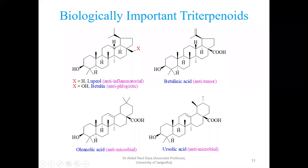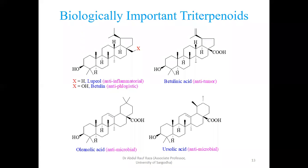Rather than a five-membered ring, it is converted into a six-membered ring. The compound is called oleanonic acid and it is antimicrobial — it kills the growth of microbes, which may be fungi, bacteria, or other pathogenic microorganisms. So bacteria, fungi, and other pathogenic microorganisms are killed by oleanonic acid.